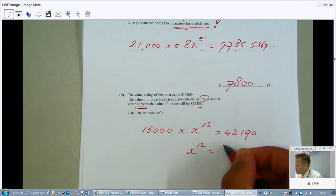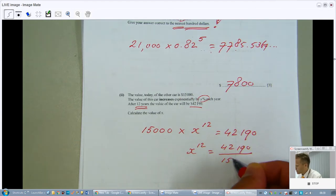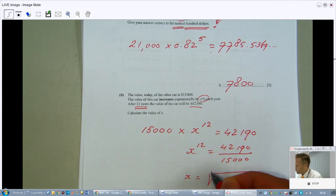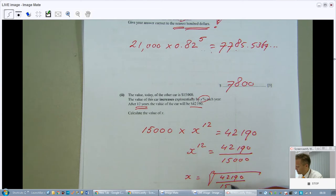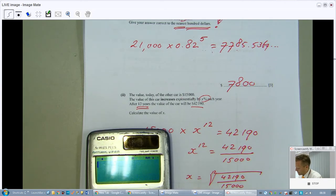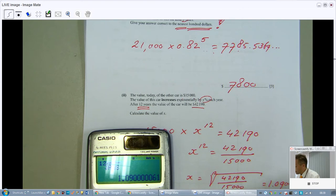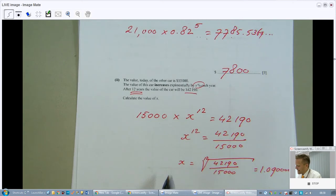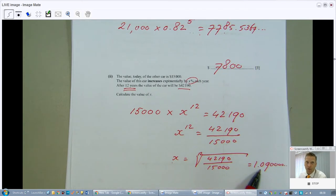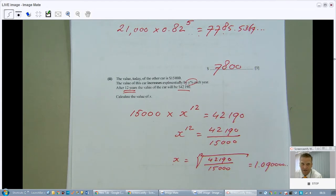Let's work this out first. X to the power of 12 will be $42,190 divided by $15,000. So, X will be the 12th root of that. I'm going to grab my calculator. $42,190 divided by $15,000 equals the 12th root of, there we go, my answer equals. So, as I said, it's 1.09. So, that means that X is 109% of the original value. So, that is an increase of 9%.